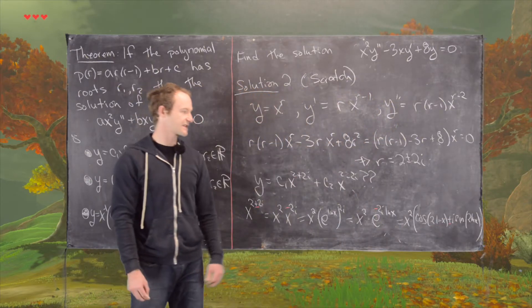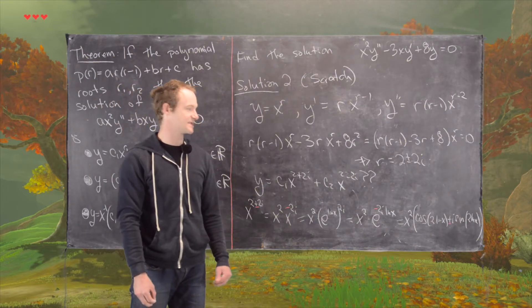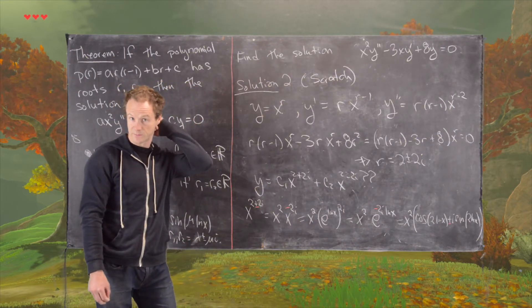So in other words, we have x squared cosine 2 natural log of x plus or minus sine 2 natural log of x.